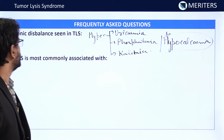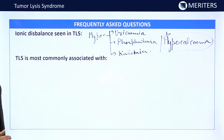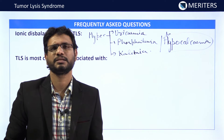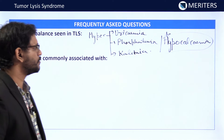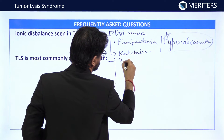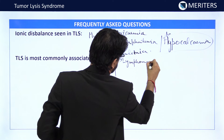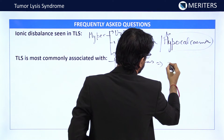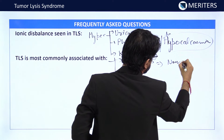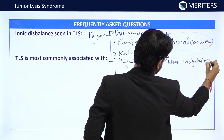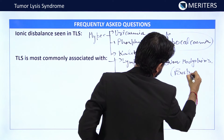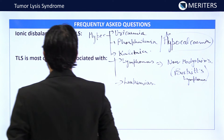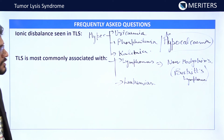FAQ: Tumor lysis syndrome is most commonly associated with tumors of the hematopoietic system or hematologic origin — specifically lymphomas, leukemias, and in lymphomas, high-grade non-Hodgkin's lymphoma, particularly Burkitt's lymphoma. These are the common tumors associated with tumor lysis syndrome.